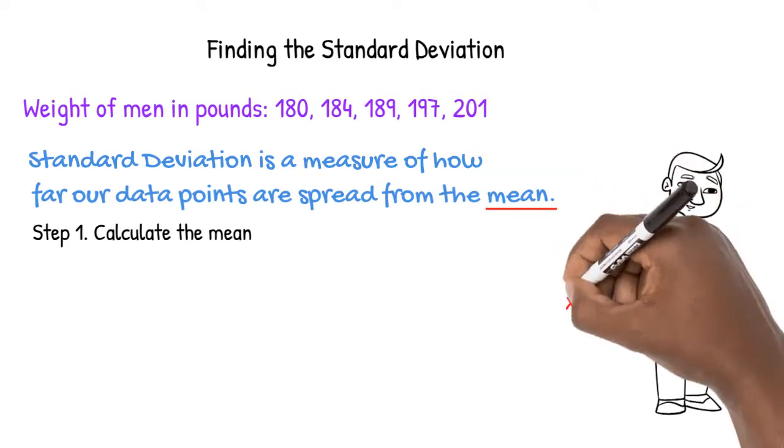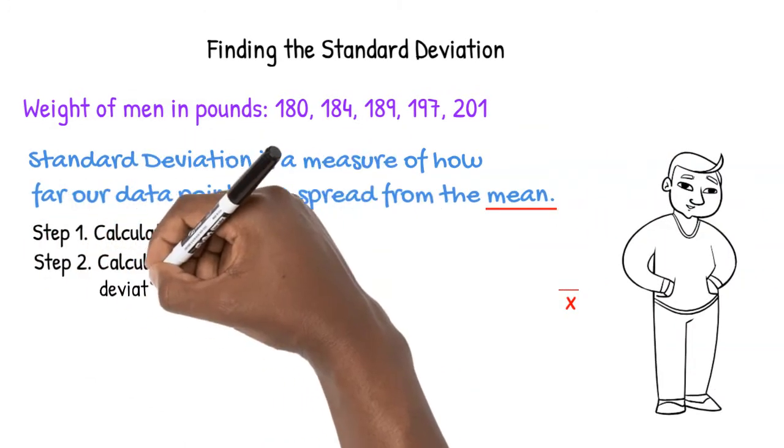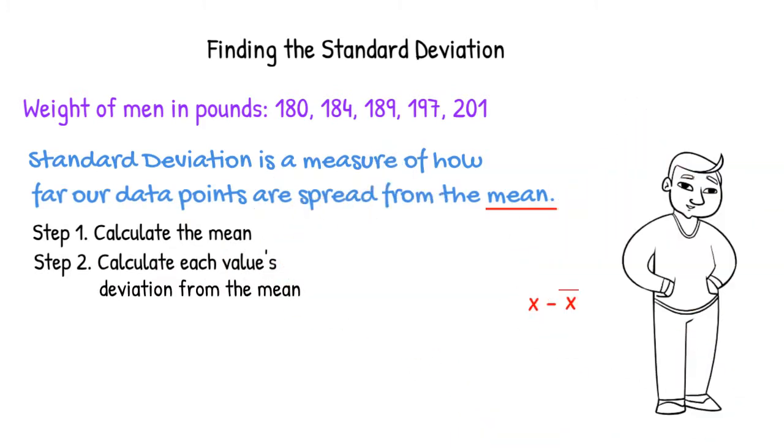Moving forward, this is the symbol that we will use for mean. Step 2: Calculate each value's difference from the mean, otherwise known as its deviation from the mean.